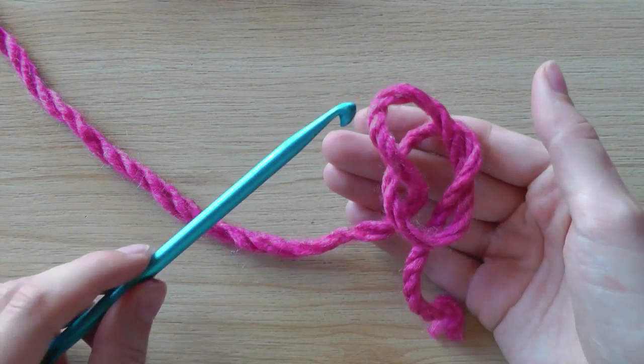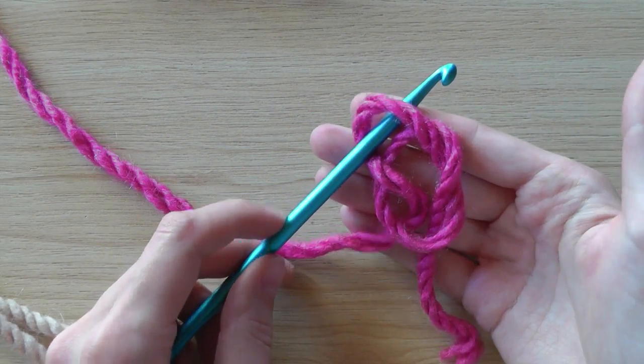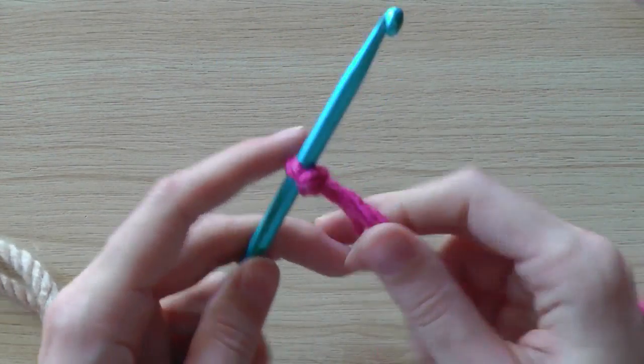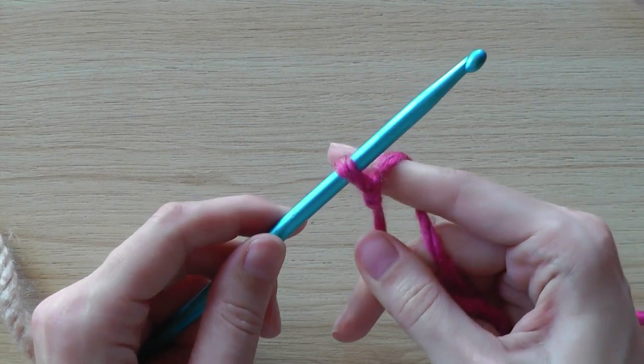Then take your nookin needle, go through this loop and tighten. So this is your starting slipknot.